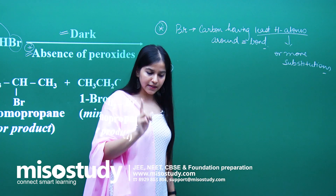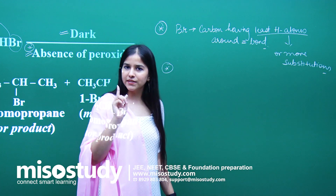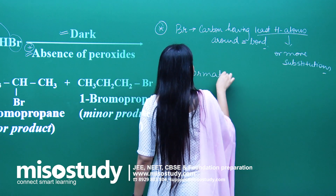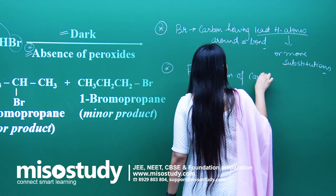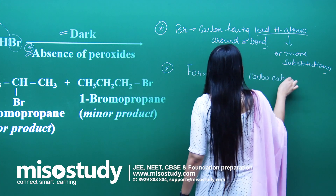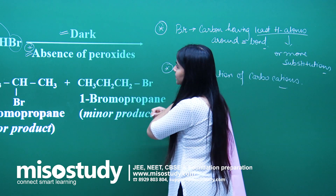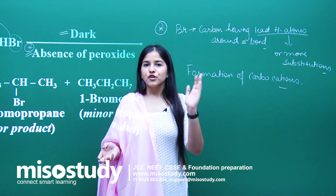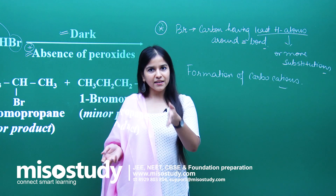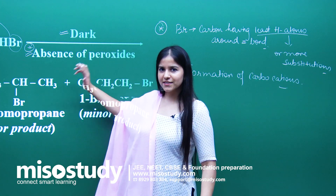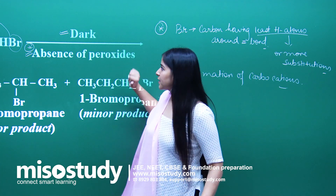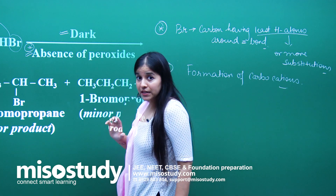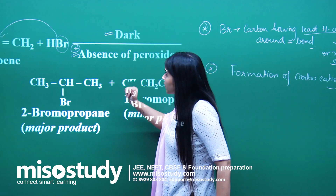The second key point: always remember in the case of Markovnikov's rule, there is the formation of carbocation — so it proceeds via the formation of carbocation. Since it proceeds with the formation of carbocation, obviously tertiary carbocation will be more stable, then secondary, and then primary. Since it happens in the absence of peroxide, no role of peroxide is there.